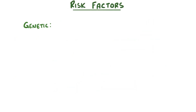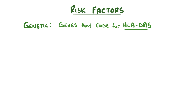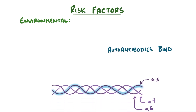Genetic risk factors for Goodpasture syndrome include having genes that encode a specific type of immune molecule called HLA-DR1-5, which is used to identify and bind to foreign molecules. Environmental risk factors also play a role, relating back to the fact that the autoantibodies bind to a specific part of the alpha-3 chain that's usually hidden deep within the folded chains.